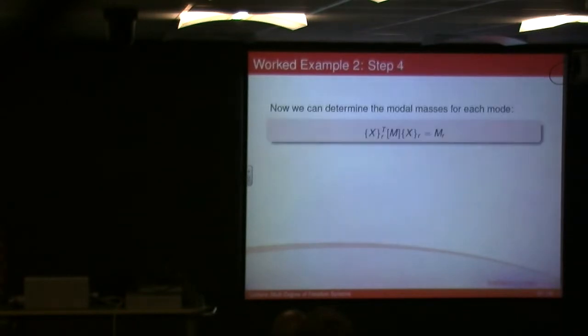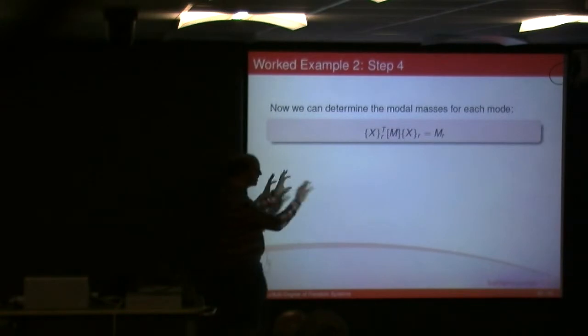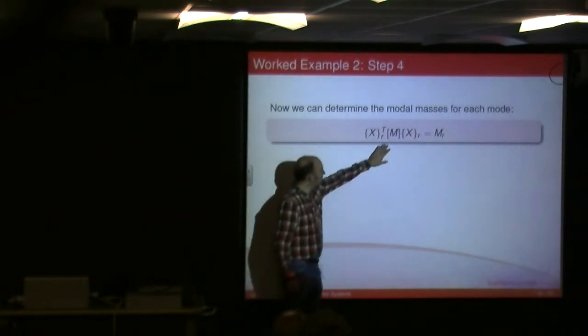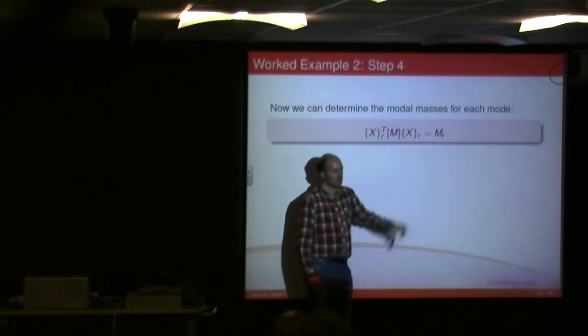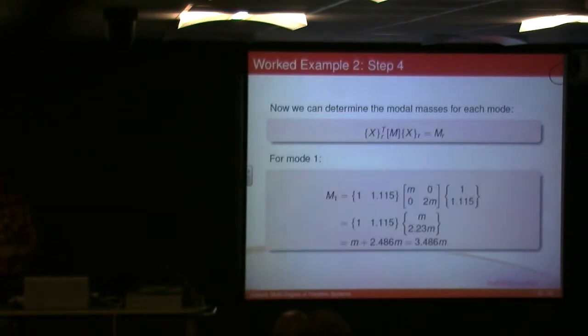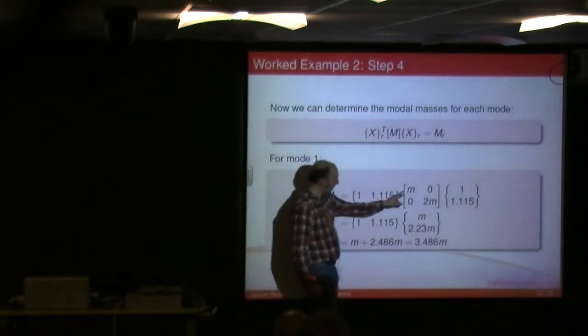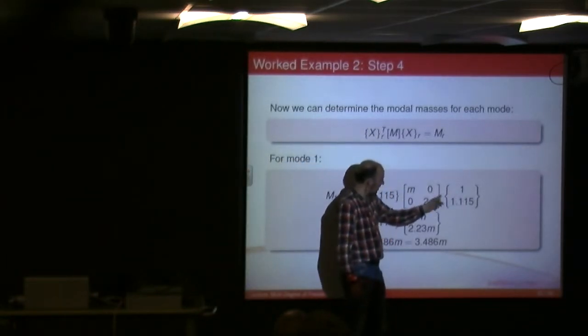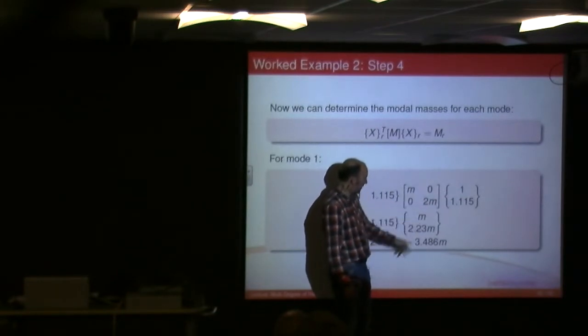Now, step four, find the modal mass. So I take my mode shape. I transpose it, so it's written horizontally, multiplied by my mass matrix, times by my mode shape, will give me a value which is my modal mass, mR. So I go through, I solve. Obviously here we've got m times by 1 plus 0 times by 1.115. So obviously that's quite clearly going to be m.